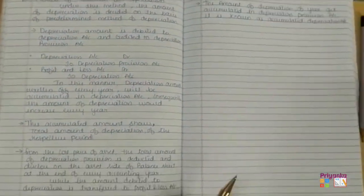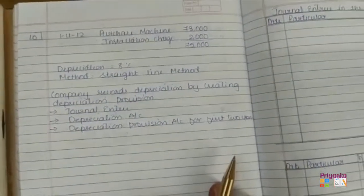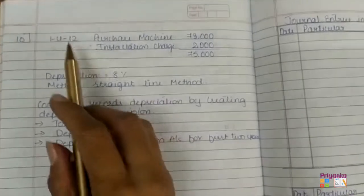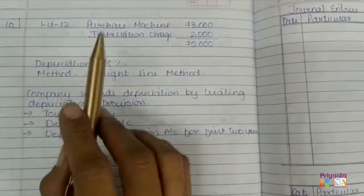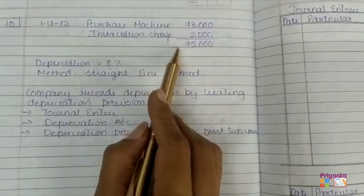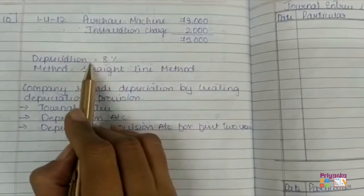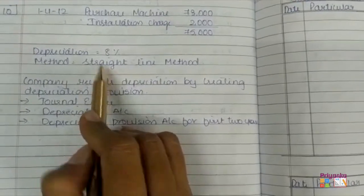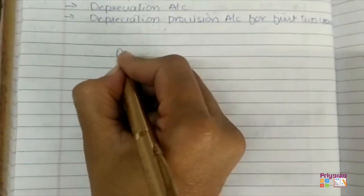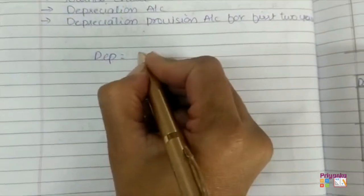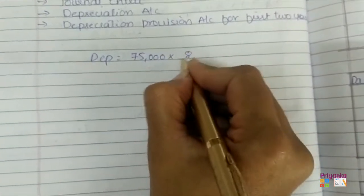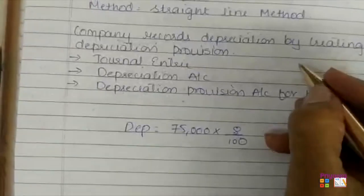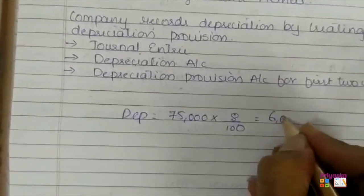This is the theory which has to be written down in your notebook. Now I will show you the calculation. The cost price is 75,000 — that is the machine price of 73,000 plus installation expenses of 2,000. We are going to charge 8% depreciation under the straight line method on 75,000, giving a depreciation of 6,000 per year.